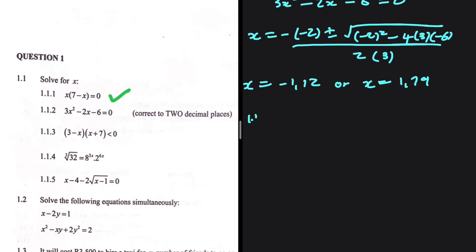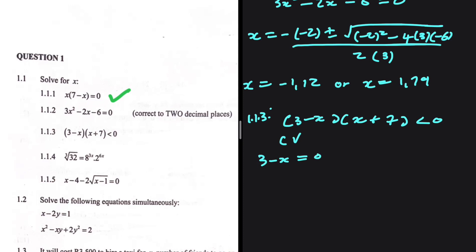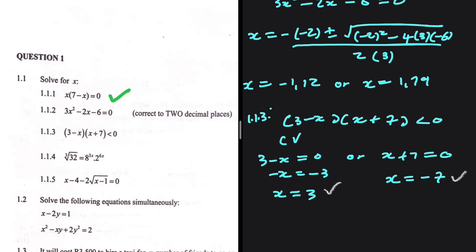1.1.3 is quite an interesting one. We have (3 minus x) multiplied by (x plus 7) being less than 0. This inequality is already factorized, so we don't have to do much here. We can go straight to the critical values. We say that 3 minus x equals 0 or x plus 7 equals 0. That gives x equals 3 and x equals negative 7 as our critical values.